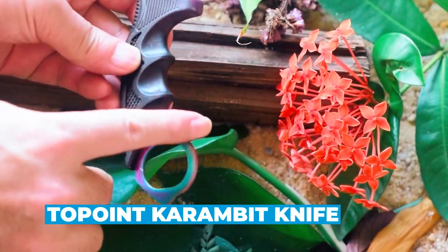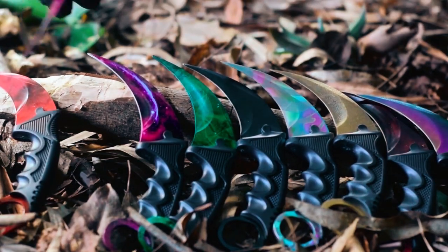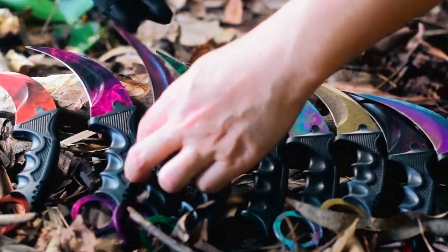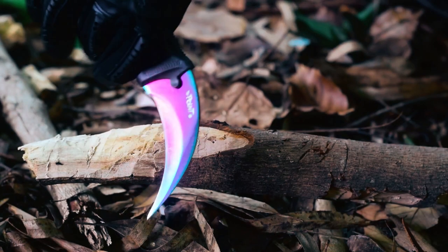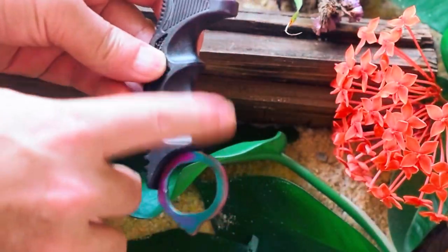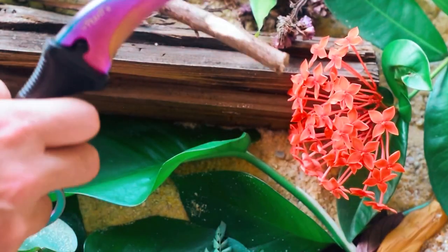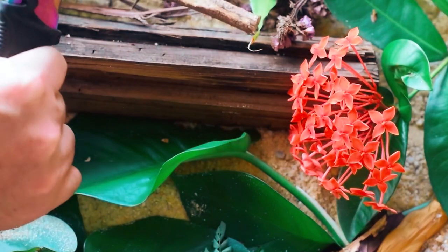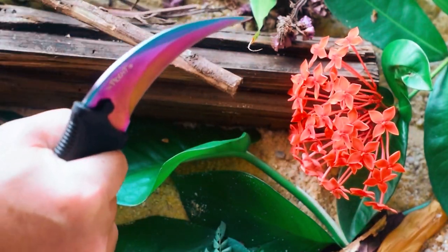2-Point Karambit Knife. The 2-Point Karambit Knife is a reliable and versatile outdoor tool. Crafted from high-quality stainless steel, it features a non-skid plastic handle for a secure grip. Its sharp and rust-proof blade makes it perfect for various outdoor activities like hunting, fishing, and camping.